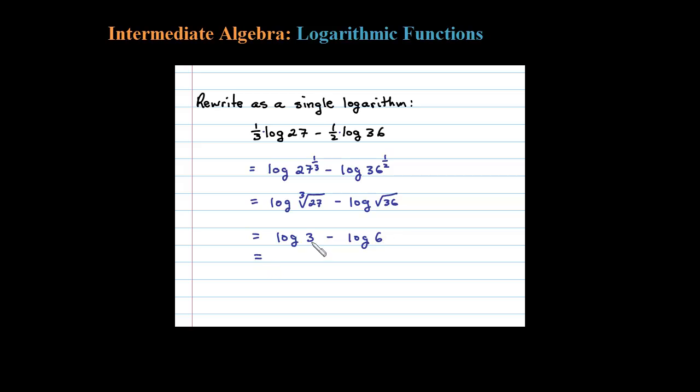Okay, and then for the last step here we would apply the property that says when you have subtraction, two logs of the same base - of course the base here is 10 when it's not given - we can divide those arguments. So we have 3 divided by 6, which simplifies to the log of 1/2.